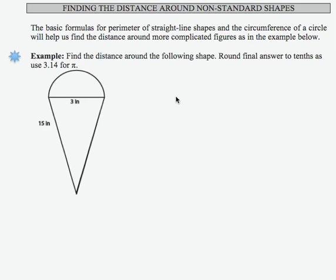I can find the distance around non-standard shapes if I recognize parts of the shapes as things that I know. So if I want to find the distance around what looks like a snow cone here, I need to look at this circular distance as half of the circumference of a circle that has diameter 3. And then I can just add 15 inches and 15 inches for the lengths of the sides.